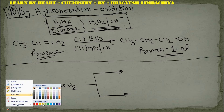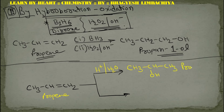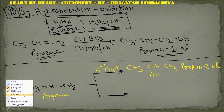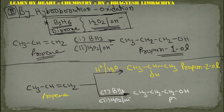H2O with H+ means acid-catalyzed hydration, so from propene we get propan-2-ol. But if we use reagents BH3 in the first step and H2O2 with OH- in the second step, then at that time we get propan-1-ol.